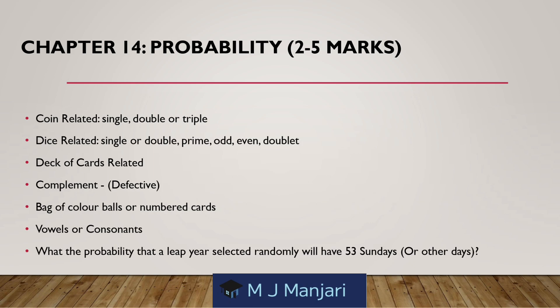Chapter 14: Probability — weightage 2 to 5 marks. Topics include: coins-related questions — single, double or triple; dice-related questions — single or double, involving prime, odd, even or doublet outcomes; deck of cards-related questions; complement; defective items; bag of coloured balls or numbered cards; verbal or constant probability; and questions like — what is the probability that a leap year selected randomly will have 53 Sundays or other days.